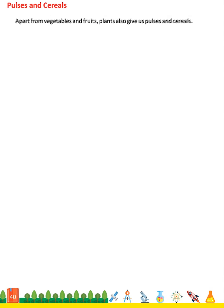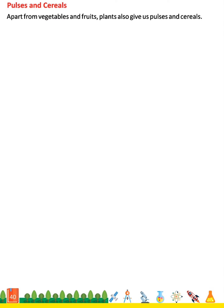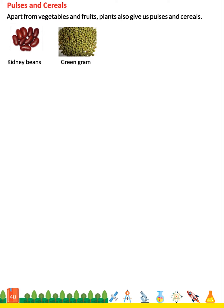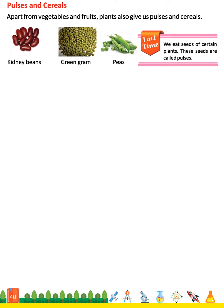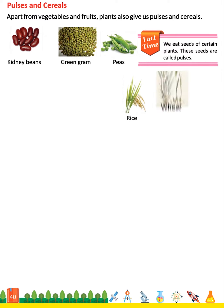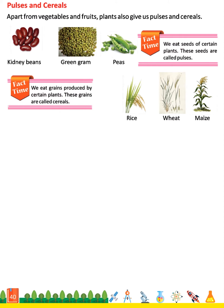Pulses and Cereals: Apart from vegetables and fruits, plants also give us pulses and cereals. Kidney beans, Green gram, Peas. Fact time: We eat seeds of certain plants — these seeds are called pulses. Rice, Wheat, Maize. Fact time: We eat grains produced by certain plants — these grains are called cereals.